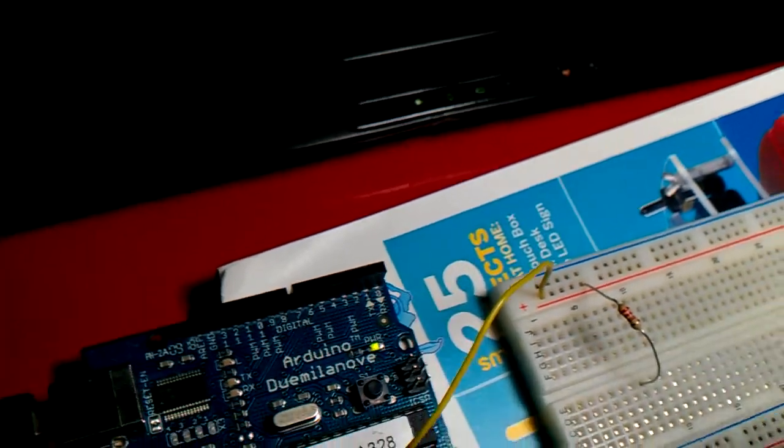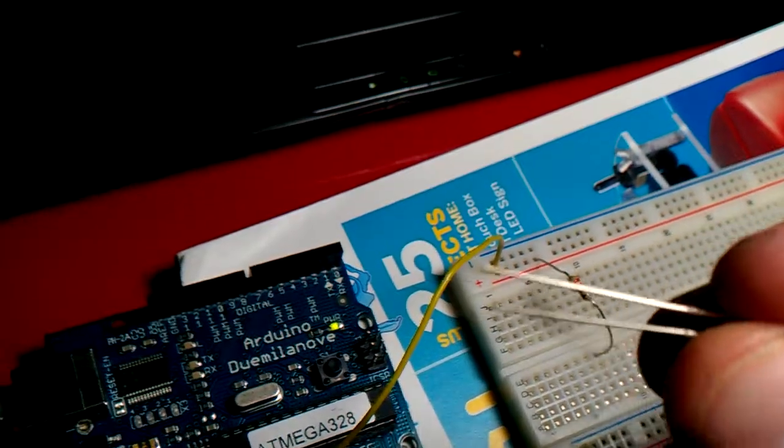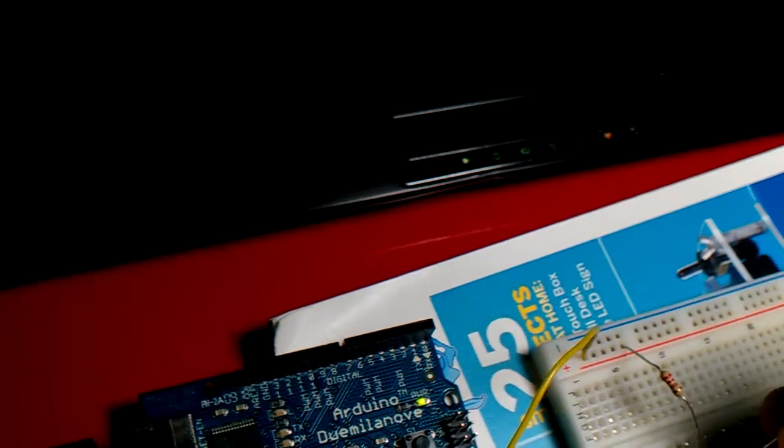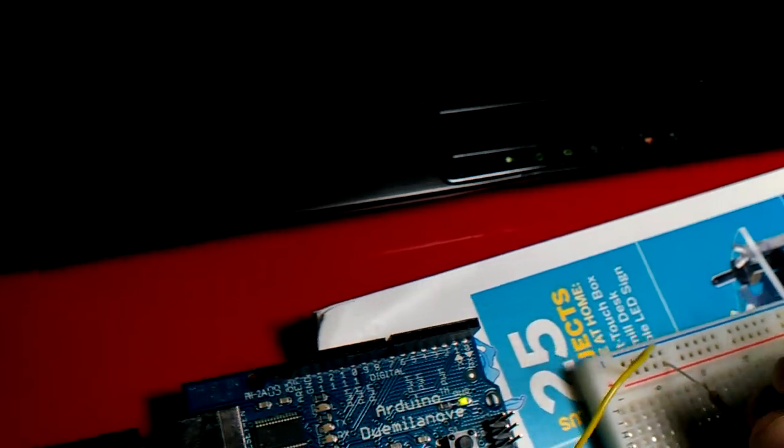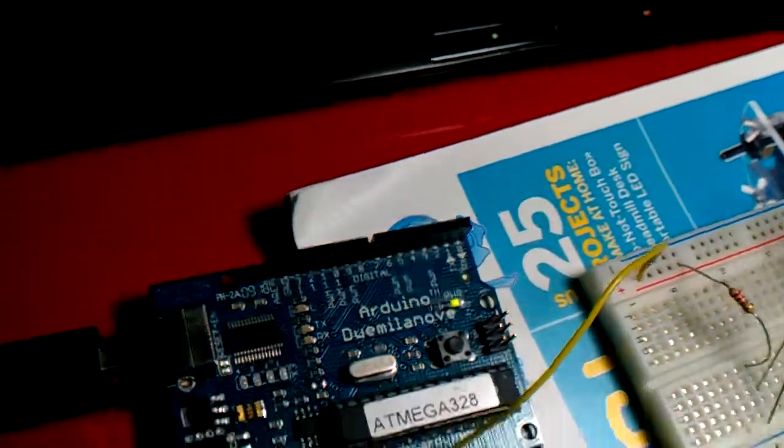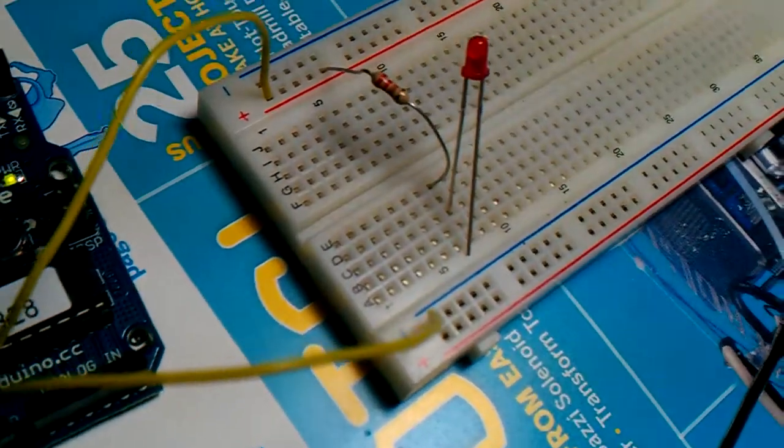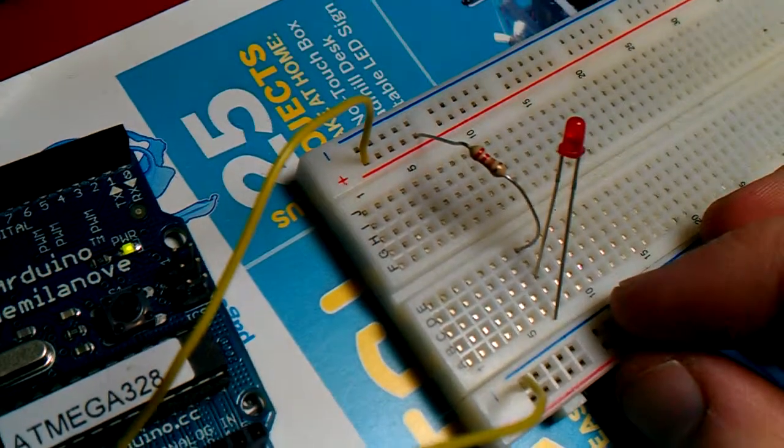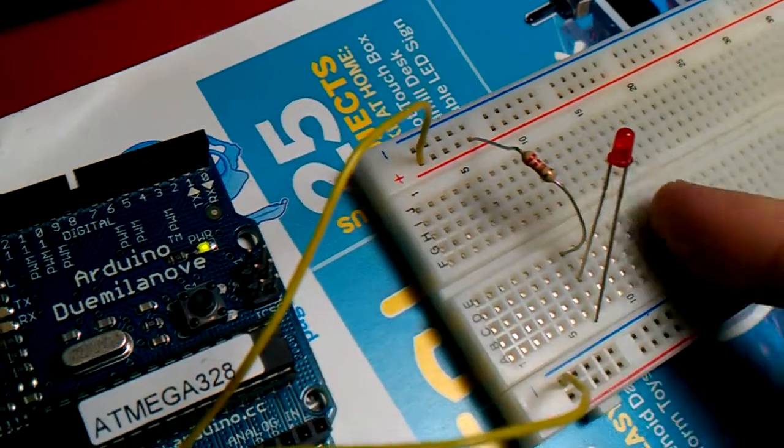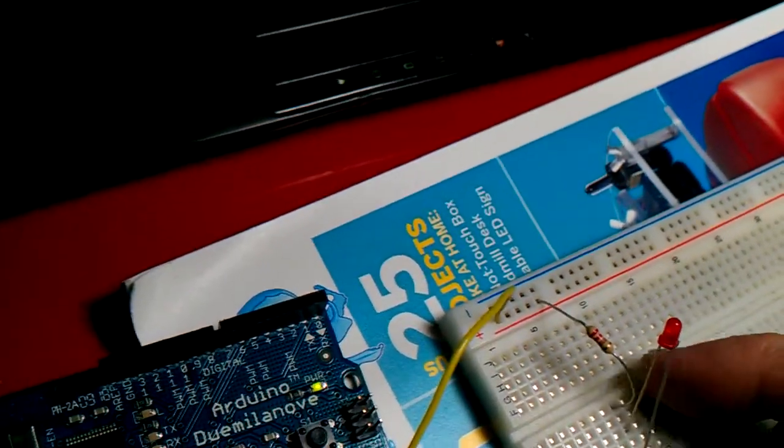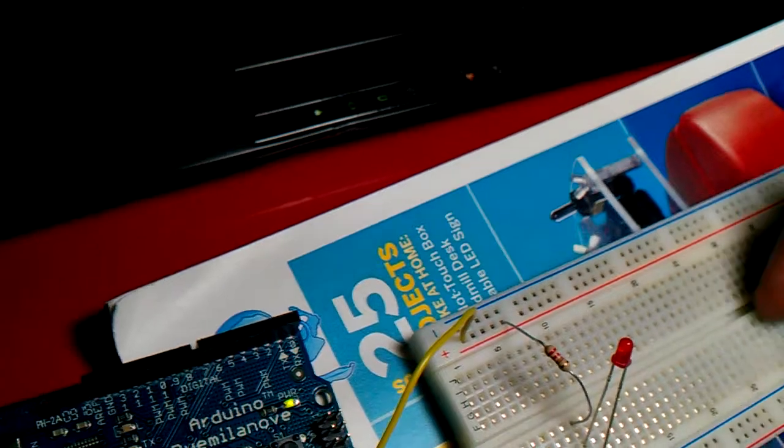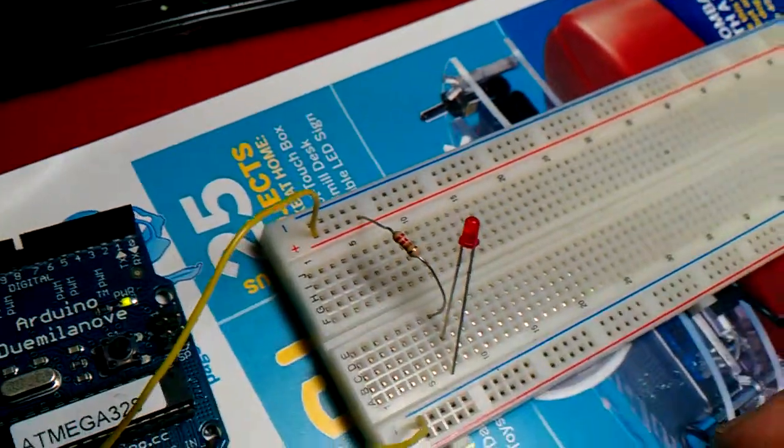I'm going to take the long end and I'm going to plug it in what we call series with this resistor. Which means in order for the current to get to this LED, it has to go through that resistor first. You can see I have one side plugged in, in series with the resistor. Anything going vertically on the board is connected, separated by this rail in the middle.